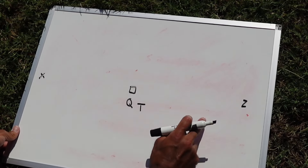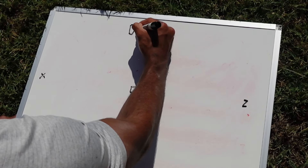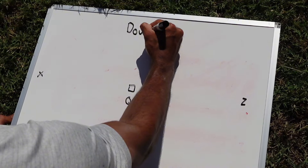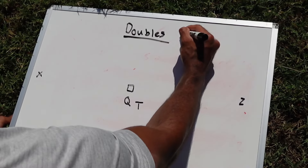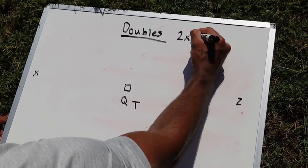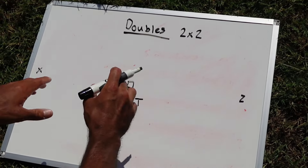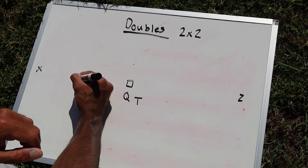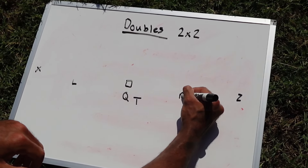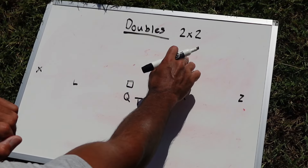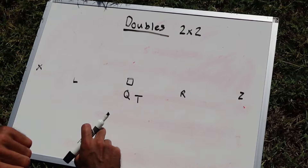Now there are a lot of different things for slot receivers. This is a doubles formation — they call it that just because it's two receivers on each side. Some people might refer to this as a two-by-two formation. I refer to my slot receiver on the left as the L and then my slot receiver on the right as the R, and they are off the ball. So this would be a doubles formation where we have two receivers on each side and then one running back in the backfield.